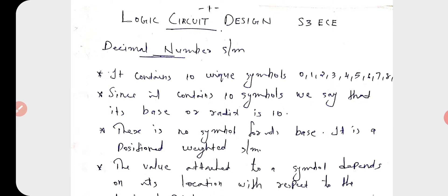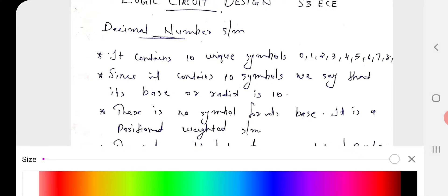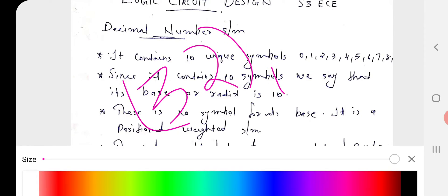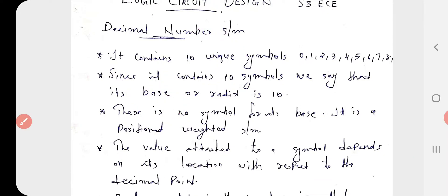Since counting in decimal involves 10 symbols, we say that its base or radix is 10. There is no symbol for its base, that is for 10, and it is a position weight system.